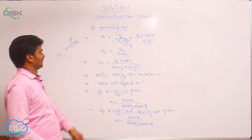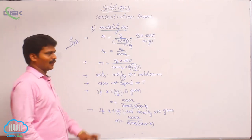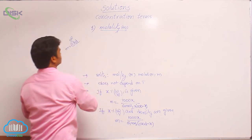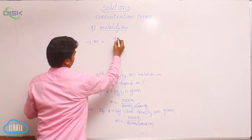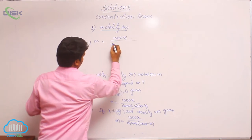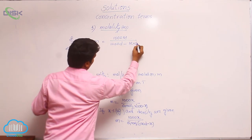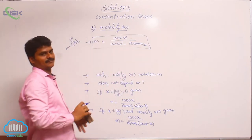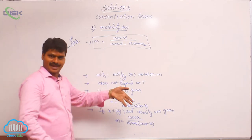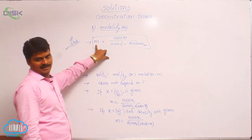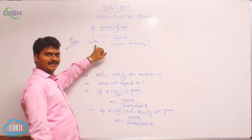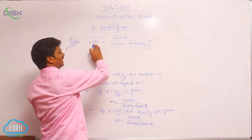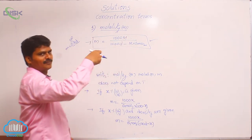These are different formulas we can use for molality. Now let us see the relation between molality and molarity. Molality (small m) = 1000M / (1000d − M × gram molecular weight of solute). This is the direct shortcut formula: if molarity M is given, use this to convert into molality.